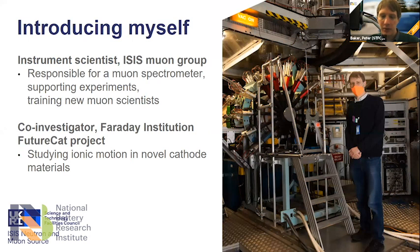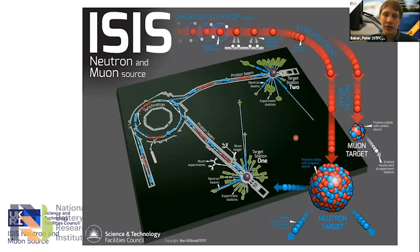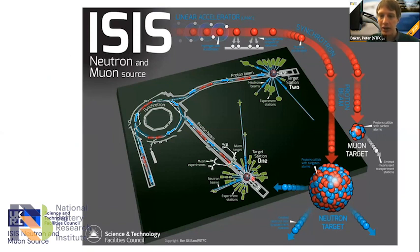I'm standing next to one of ISIS's muon spectrometers — the one we use for most experiments on battery materials, and where I've done most of the experiments for the Faraday Institution's FutureCat project. The ISIS neutron and muon source has a particle accelerator that accelerates protons up to about 85% of the speed of light, and then they're collided with stationary targets — one target that produces muons, with seven experimental areas, and two targets that produce neutrons.